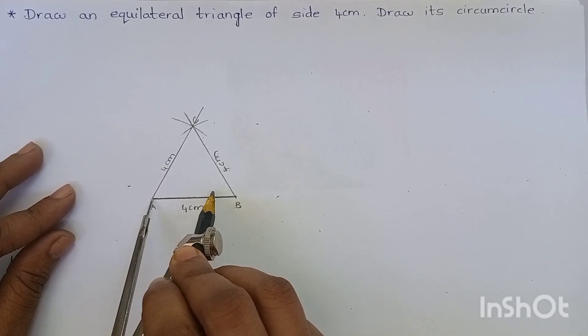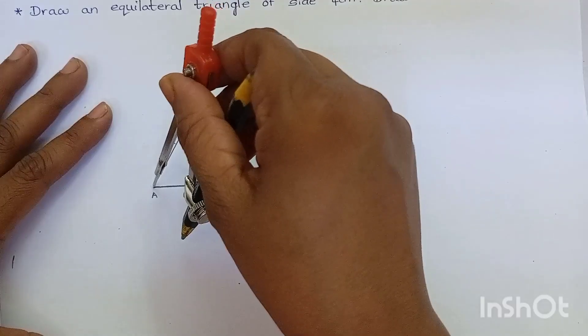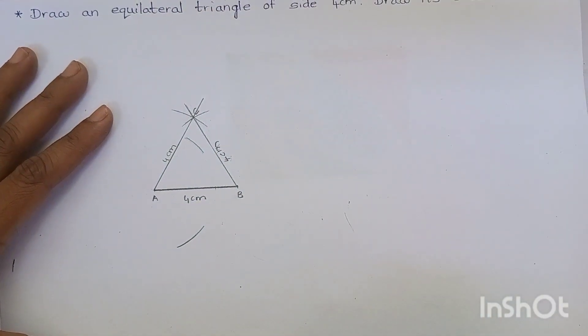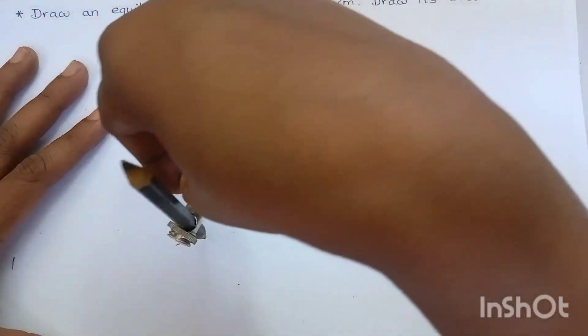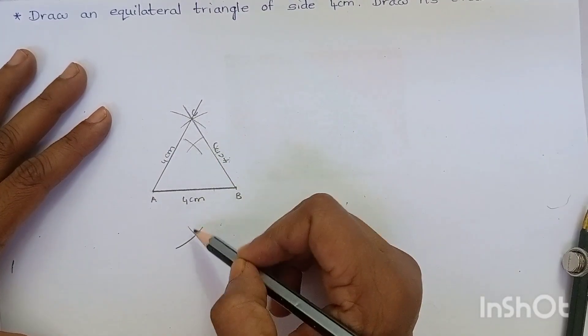Now, mark an arc from the point A. Now, mark an arc from the point B. Now, join these two points.